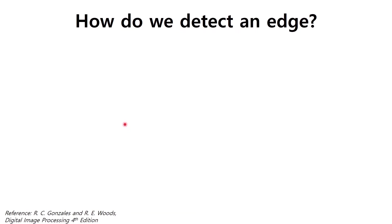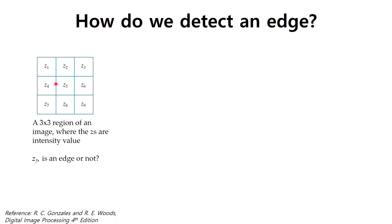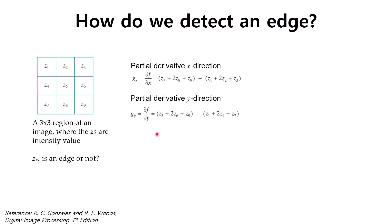How do we detect an edge in the image? First, let us take a 3x3 region of an image. Here z1 to z9 represent the pixel intensity values. We want to know whether the pixel at z5 is an edge or not. An edge is a difference between neighboring pixels, so we can calculate the difference or take the derivative between neighboring pixels. Because an image is two-dimensional, we need to calculate the partial derivative.